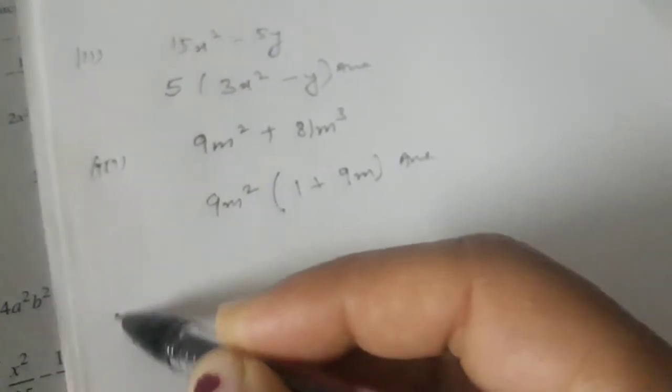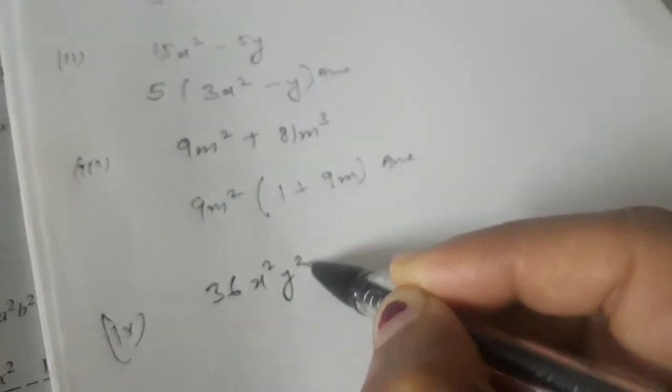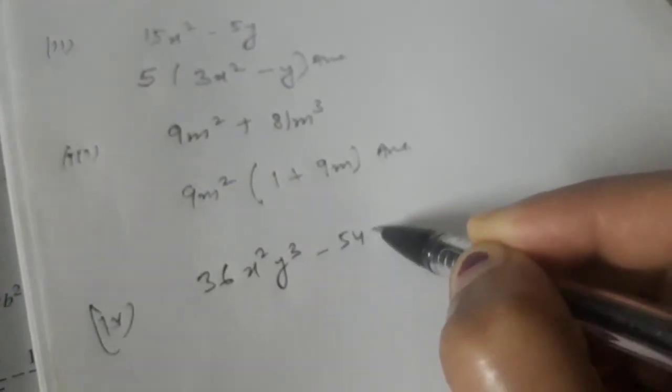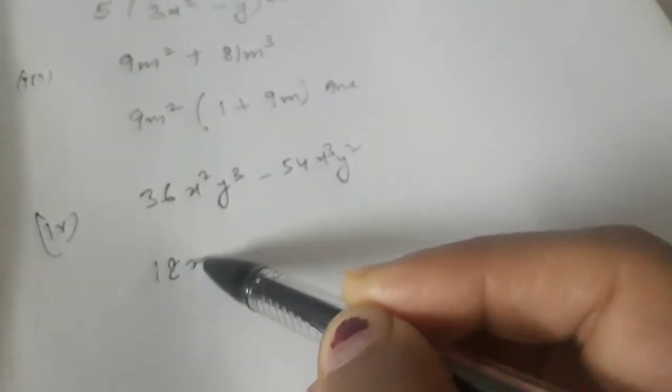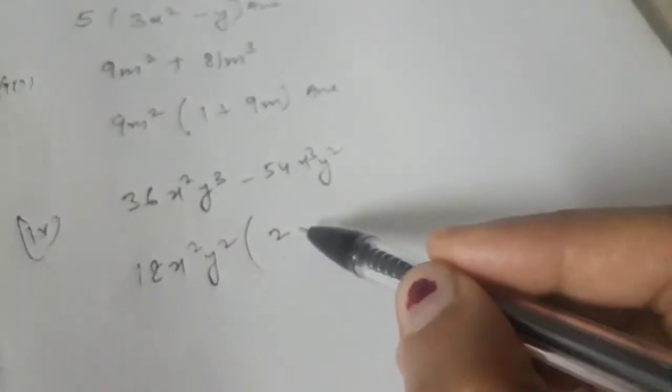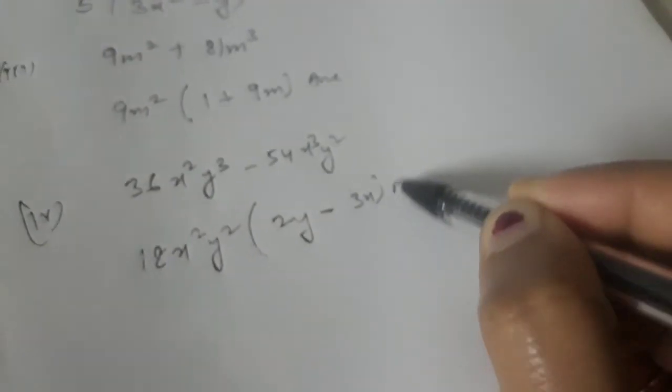The fourth part is 36x²y³ minus 54x³y². What we can take as common is 18x²y². So within the bracket we will be left with 2y, because 18 times 2 is 36, and minus 3x. So the answer is 18x²y²(2y minus 3x).